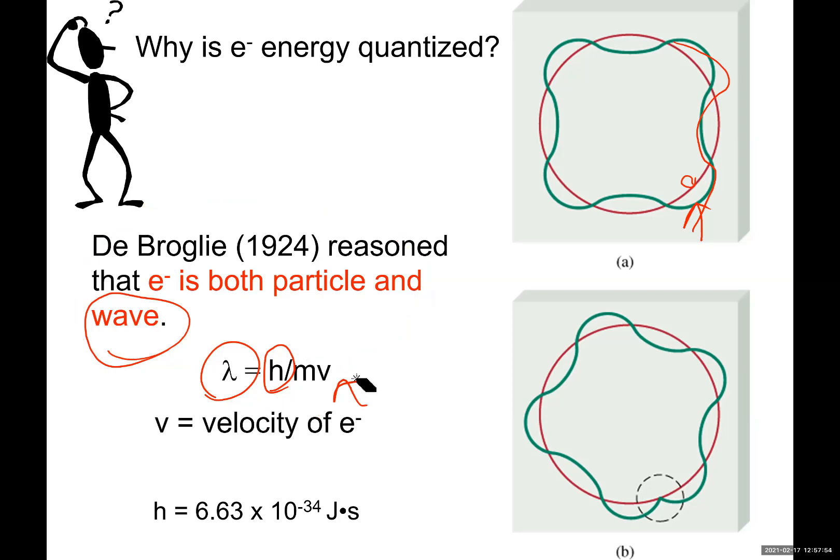So in this formula, as I said, V is velocity and M is mass of electrons. And wavelength of electrons can be calculated.